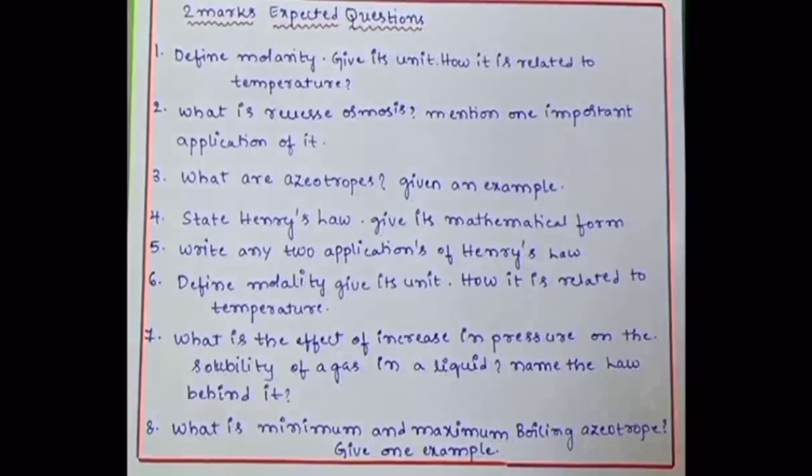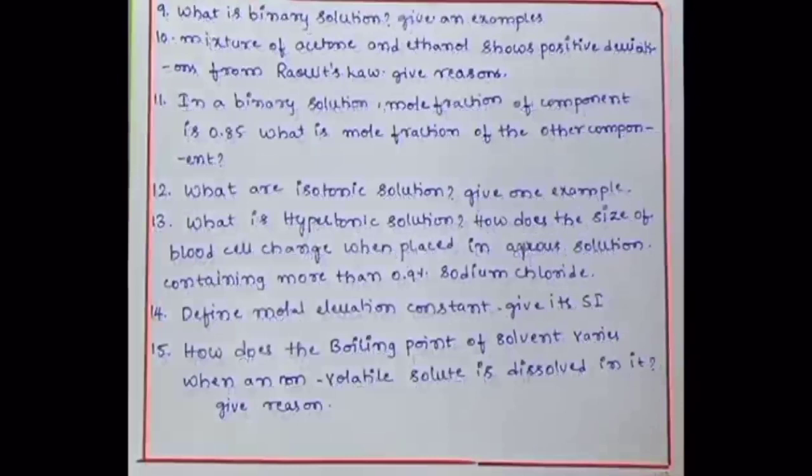What is minimum and maximum boiling azeotropes? What is binary solution, give an example. Mixture of acetone and ethanol shows positive deviation from Raoult's law, give a reason. In a binary solution, mole fraction of a component is 0.85, what is the mole fraction of the other component? What are isotonic solutions, give an example. What is hypertonic solution? How does the size of the blood cell change when placed in aqueous solution containing more than 0.9 percent of sodium chloride?